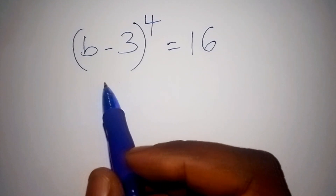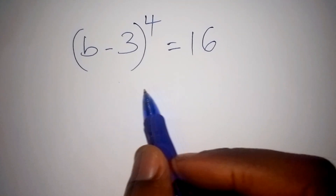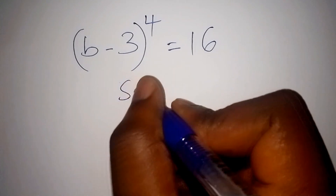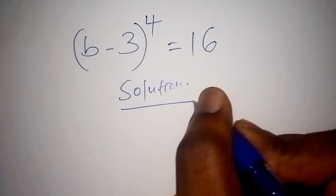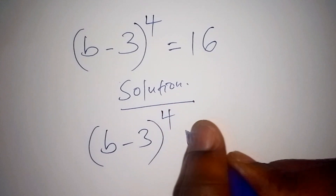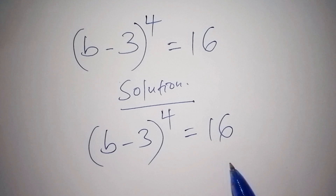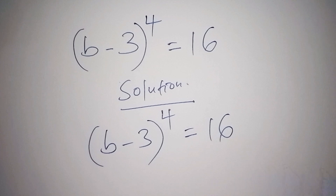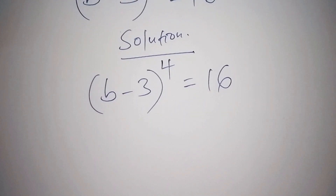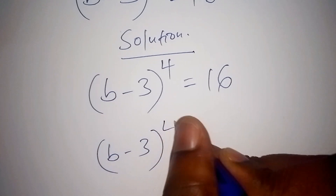Hello, are you wondering how to solve this algebra math Olympiad problem? We want to work it out in the shortest time possible. The math problem is: B minus 3, all in brackets, to the power of 4 is equals to 16. If you know how to solve this, pause the video and comment your answers, then we shall confirm after we are done.